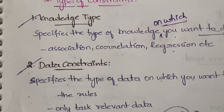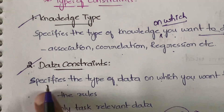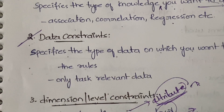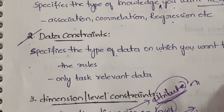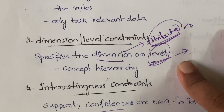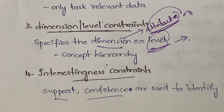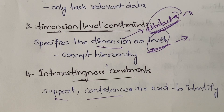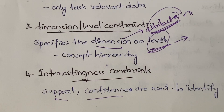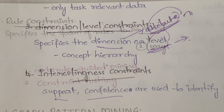To summarize: knowledge type specifies the type of knowledge on which you want to generate association rules. Data constraints specify the type of data on which you want to generate the rules. Dimension or level specifies at what dimension or level you want to generate the rules. Interestingness specifies how interesting a pattern is on which you can generate a rule — and interestingness is determined with the help of support and confidence measures.